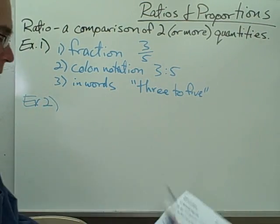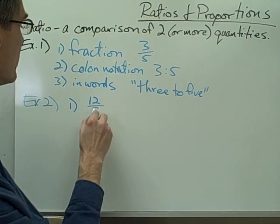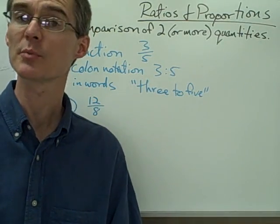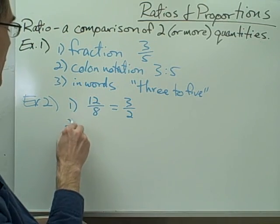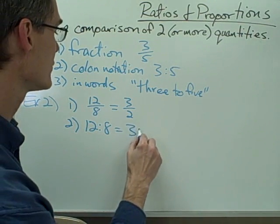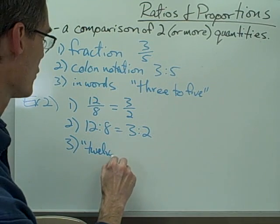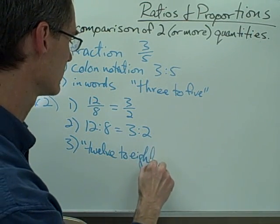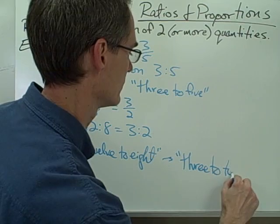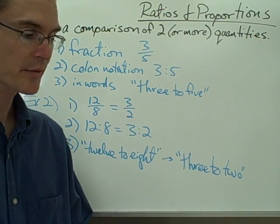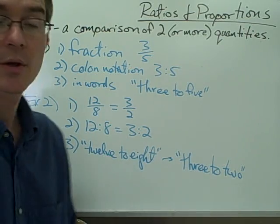Example number two: twelve touchdowns in eight football games. I would express this as a fraction, twelve over eight. With ratios, you typically want to express them in lowest terms, so twelve to eight reduces to three to two. In colon notation, twelve colon eight reduces to three colon two. In words, twelve to eight reduces to three to two. Example three: three feet in every yard is written as three to one, colon notation three colon one, and in words three to one.